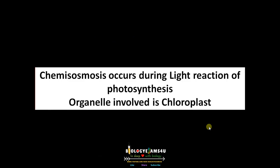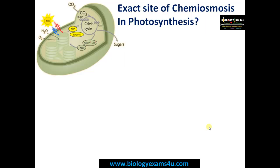Chemiosmosis occurs during the light reaction of photosynthesis, where light energy is converted to chemical energy in the form of ATP and NADPH. That energy is then utilized for fixing carbon dioxide to carbohydrate in the light-independent reaction or Calvin cycle. The organelle involved is the chloroplast.